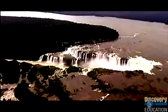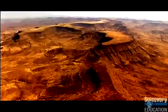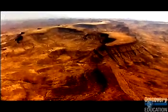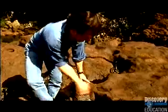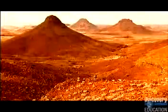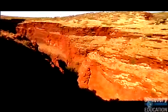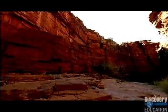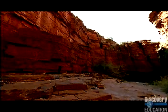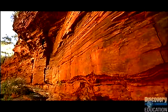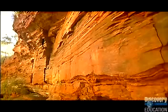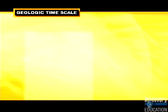When geologists want to compare the ages of rocks found in two different places, they look to the fossil record. If a rock found in South America contains fossils identical to a rock found in Africa, they are probably the same age. In general, rocks of the same age contain the same types of fossils, while rocks of different ages have different fossils. Over the past 4 billion years, there have been many changes in the types of fossils found. These changes are represented in a chart known as the Geological Timescale.